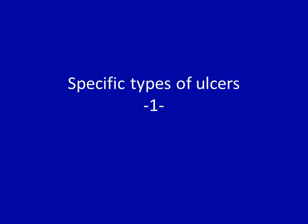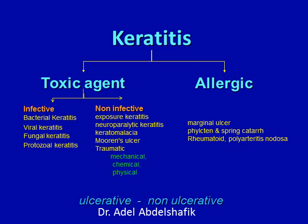Now I want to discuss some types and examples of corneal ulcers. In general, any inflammation can be due to a toxic agent or allergic reaction. A toxic agent can be infective or non-infective. Infective keratitis can be due to bacteria, viral, fungal, or protozoa.